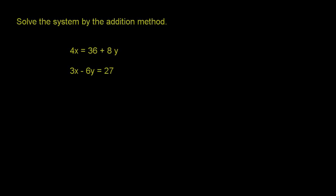Welcome to this video on solving a system of equations by addition. Let's read the problem. It says to solve the system by the addition method. The first equation is 4x equals 36 plus 8y. The second equation is 3x minus 6y equals 27.